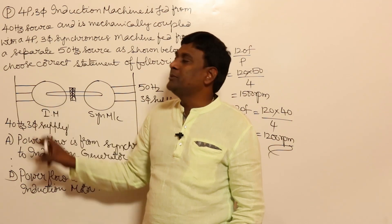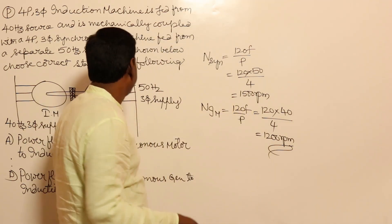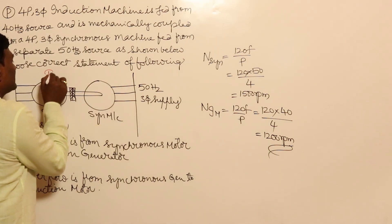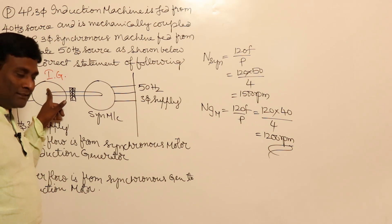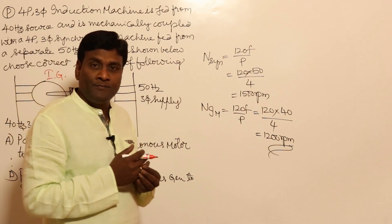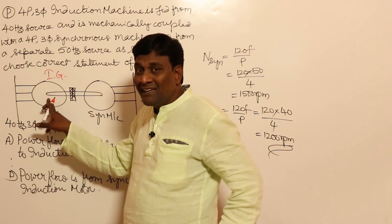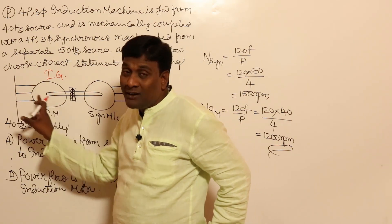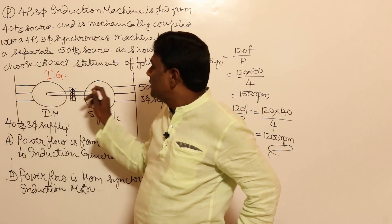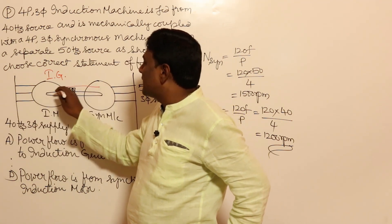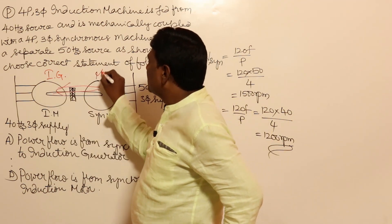Because the induction machine is rotating above its synchronous speed of 1200 RPM — specifically at 1500 RPM — it behaves as an induction generator. As an induction generator, somebody must supply mechanical power to rotate it. Therefore, the synchronous machine will act as a motor, supplying mechanical power to the induction generator.